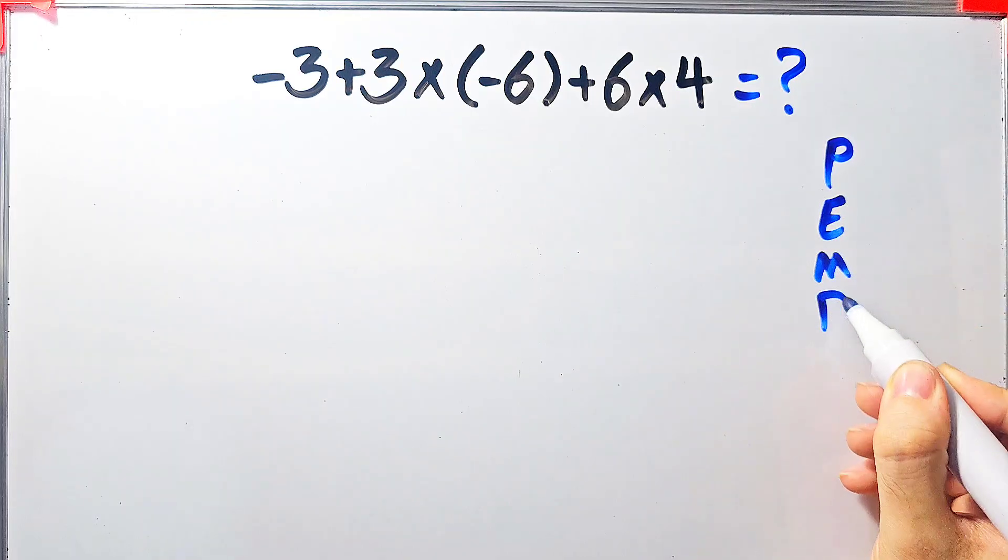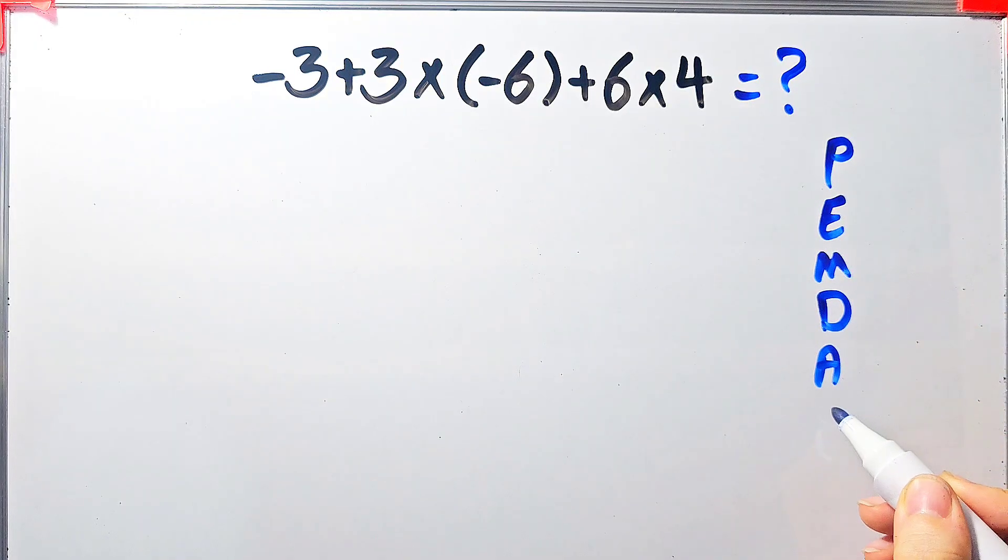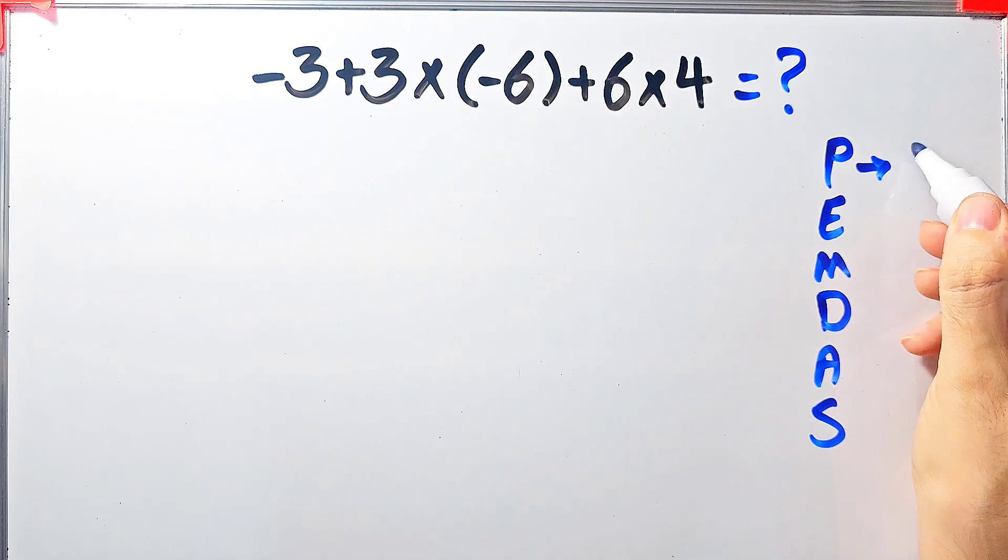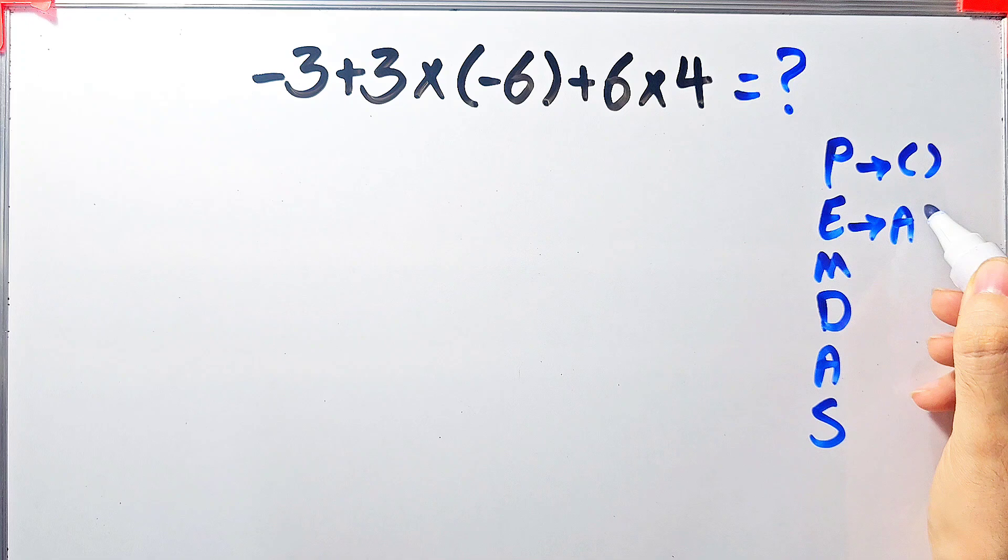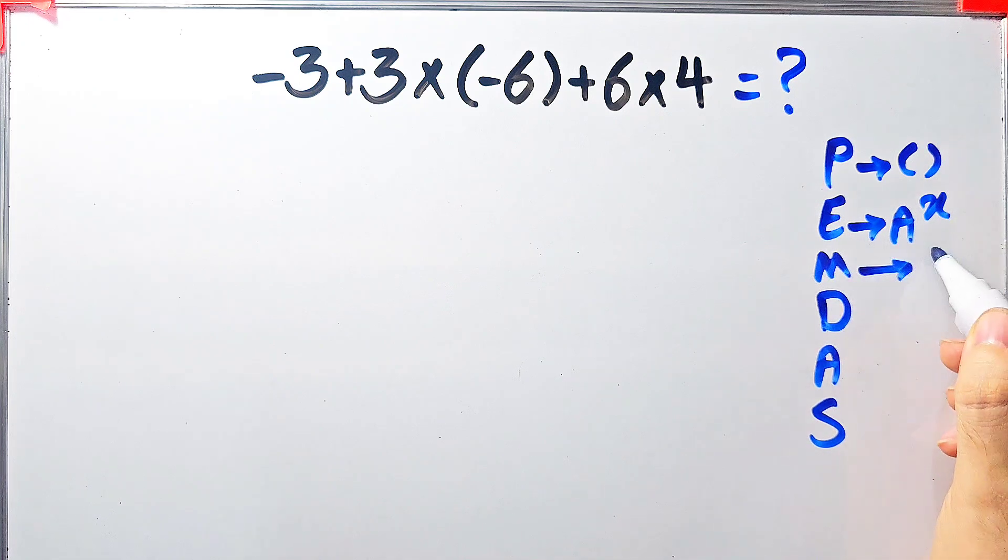PEMDAS shows the priority of the mathematical operations. As you know in this rule P stands for parentheses, E stands for exponent, M stands for multiplication.